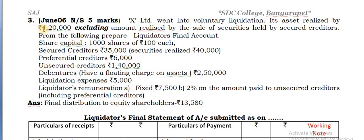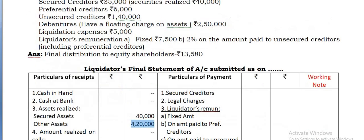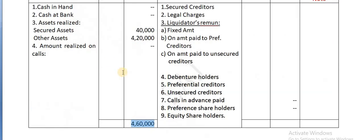Other assets are raised at 4,20,000. So, take that 4,20,000 as other assets. The total you are getting is 4,60,000 - this is the total amount being raised.